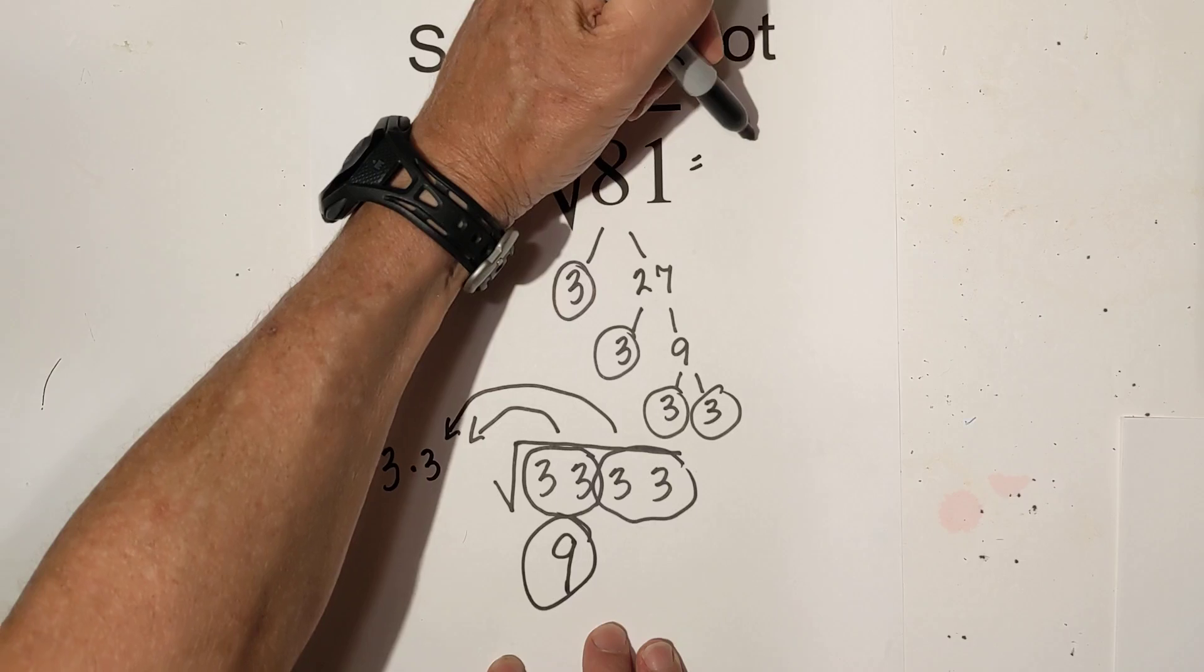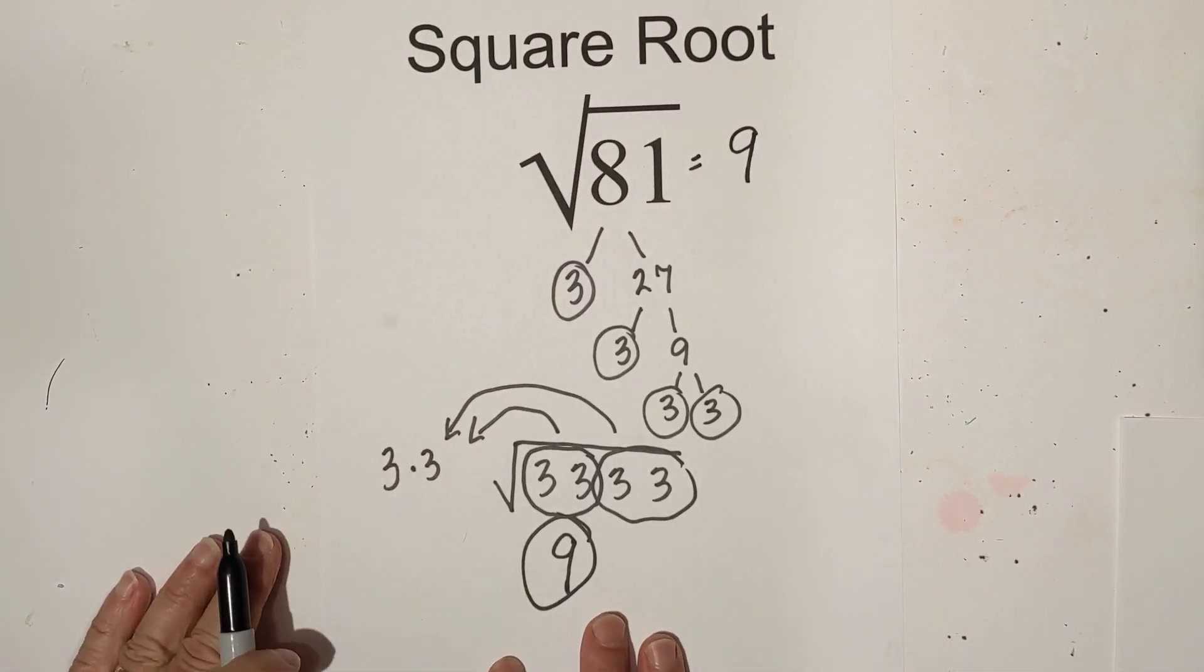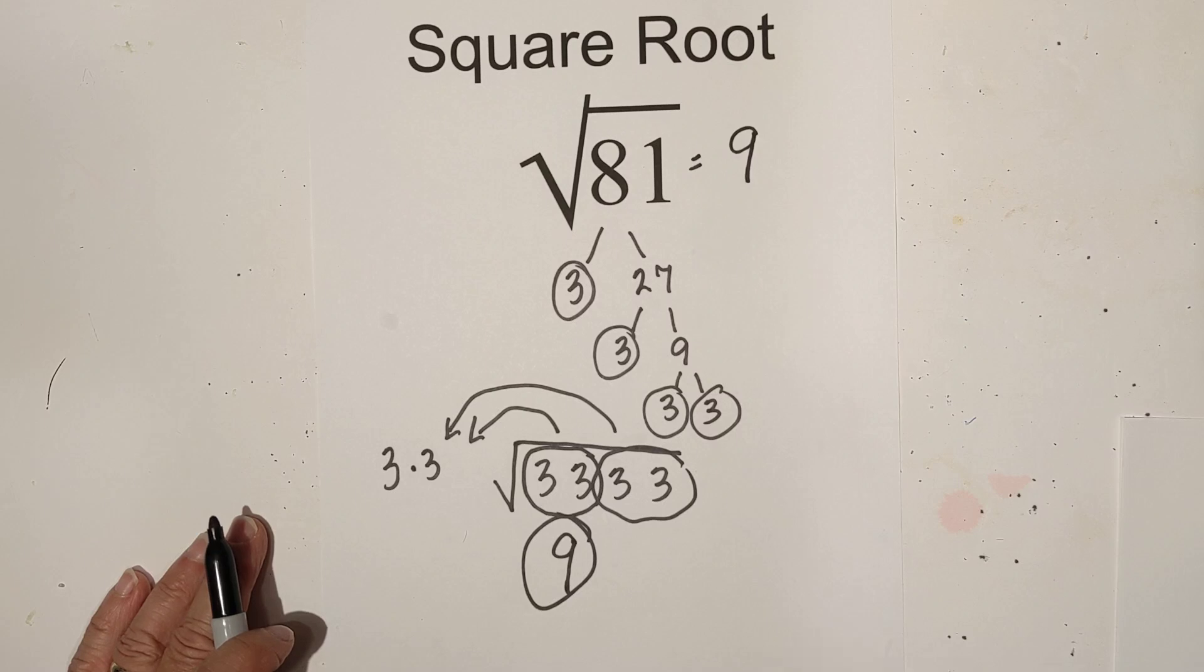So the square root of 81 equals 9. Thanks for watching and remember, kindness multiplies kindness. Be kind to someone today.